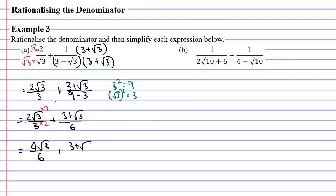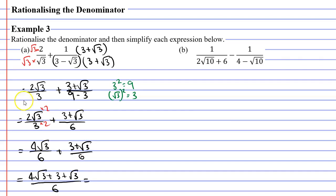Our second fraction remains the same. Now that our denominators are the same we can add our numerators: four root three plus three plus root three. Remembering that root three is the same as one root three, we have two like terms. Four root three plus one root three gives five root three. We also have our plus three, which stays separate. So our final answer is five root three plus three, all over six.